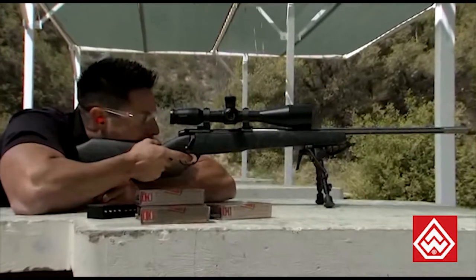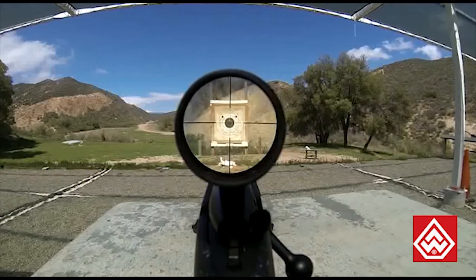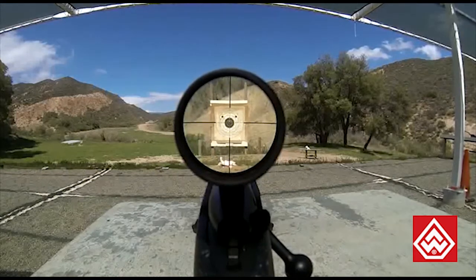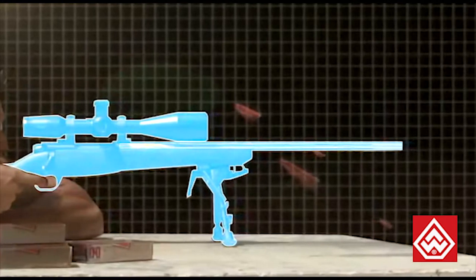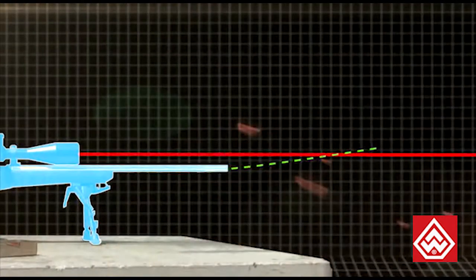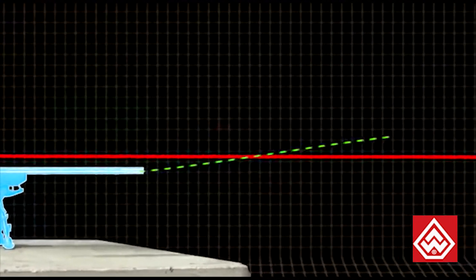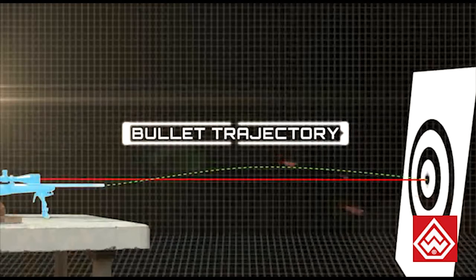Most sights on a gun are above the bore of the gun, and the sight must be aligned at a certain point known as zero. To achieve this, the barrel of the gun must be pointed upward so that the path of the bullet meets the crosshairs at a given distance. The bullet will then rise above the line of sight, creating the shape of a half circle as it meets the same impact point at a farther distance. This is known as bullet trajectory.